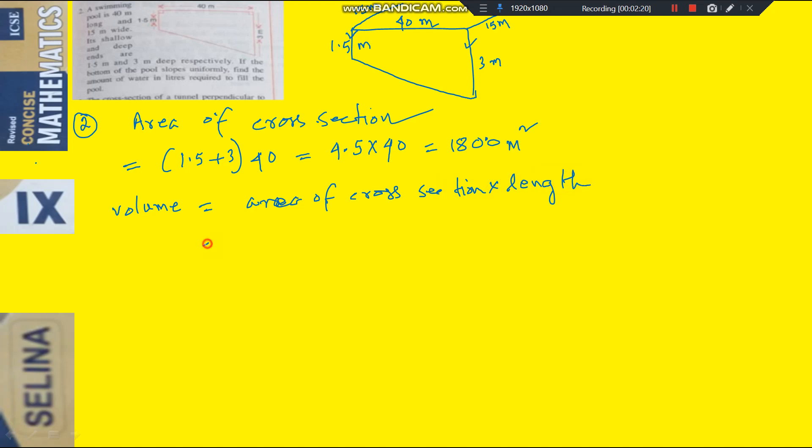What is the area of cross section? That already we have got 180 meter square, into length is 15 meter. So it will be meter cube.